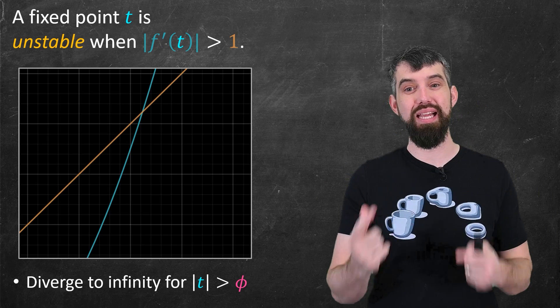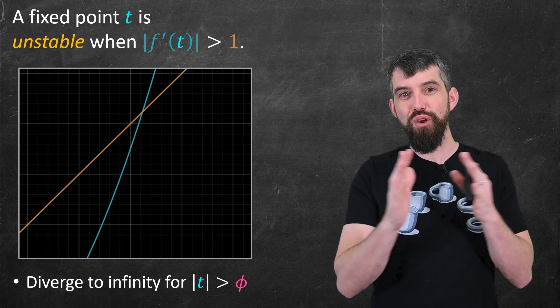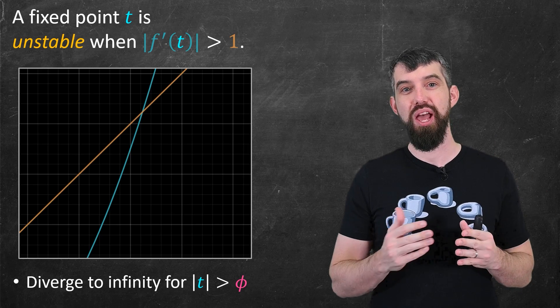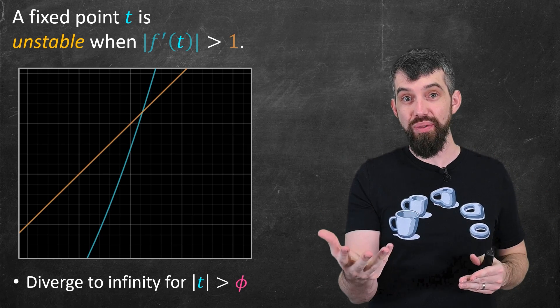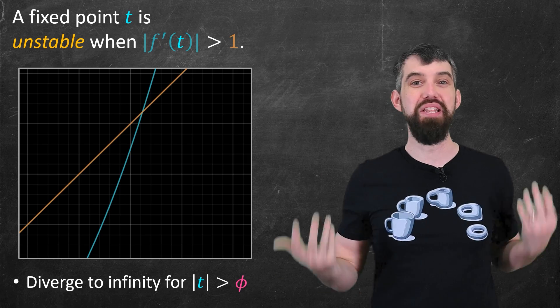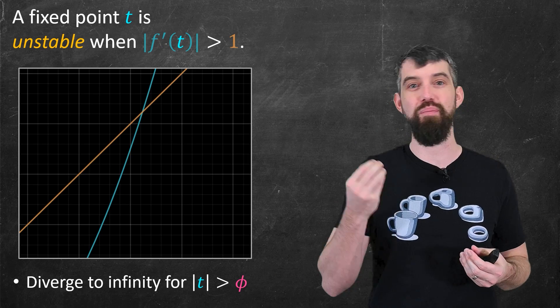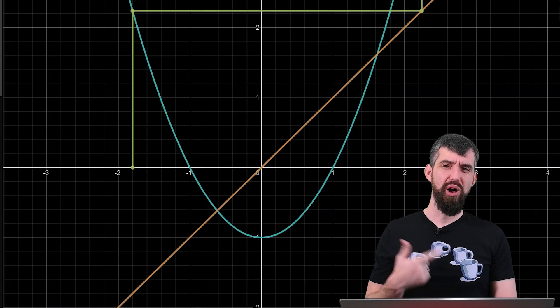And in particular, we can extend this argument to say that if you have any value of t, any initial starting spot, which has a magnitude greater than the golden ratio, then it's going to be diverging to infinity. It's going to get bigger and bigger and bigger by the same argument we're seeing here with the slopes.